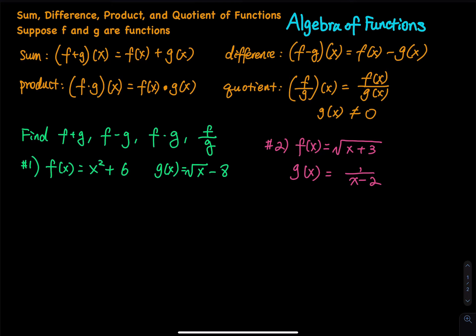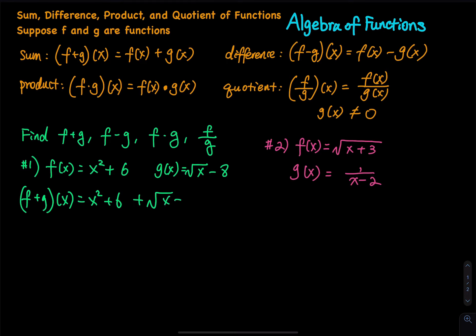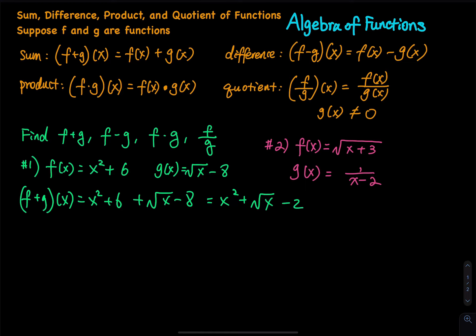We have function f and function g. I want you to write those four functions: plus, minus, multiply, and divide. For f plus g of x, that is equal to x squared plus six plus the square root of x minus a. You can simplify this a little bit: x squared plus the square root of x, and six minus a is equal to negative two. That is for the sum.